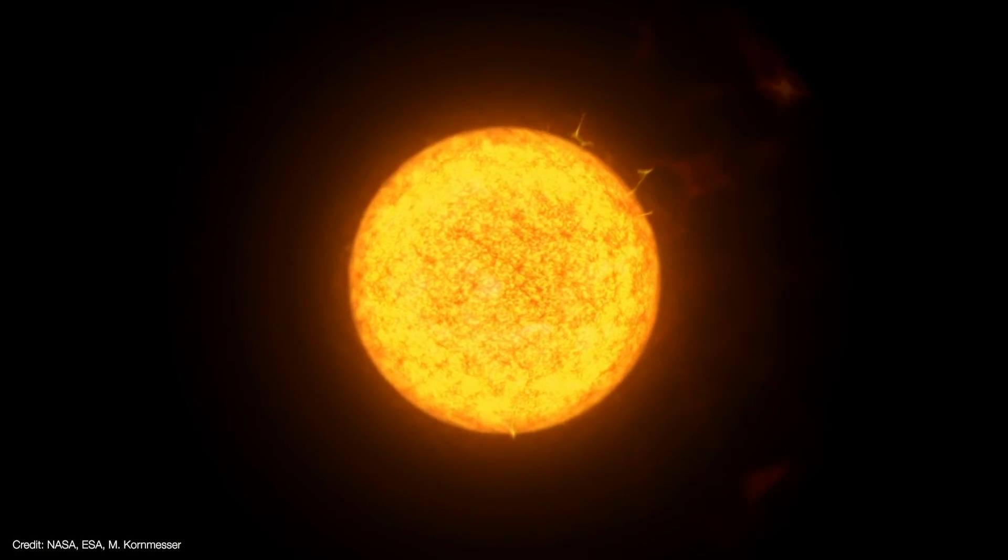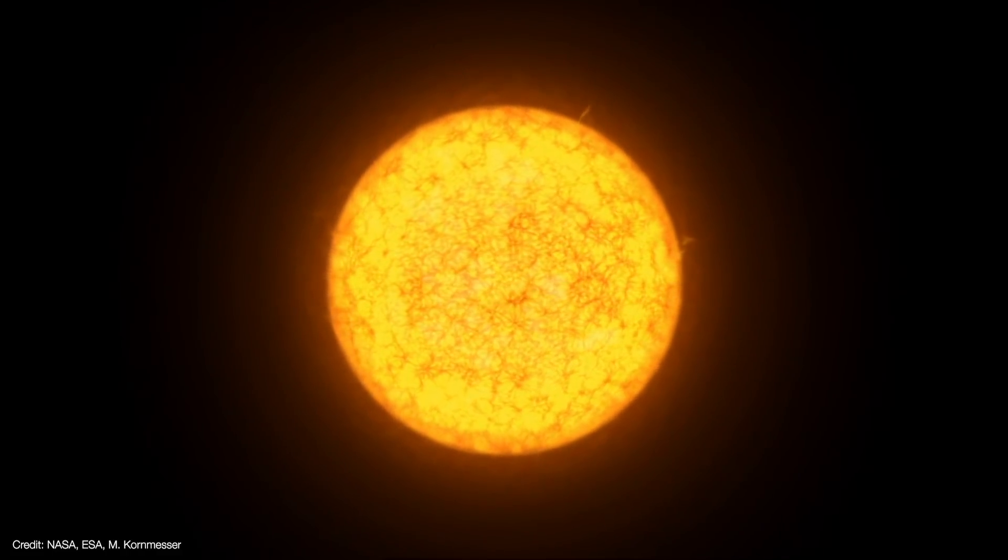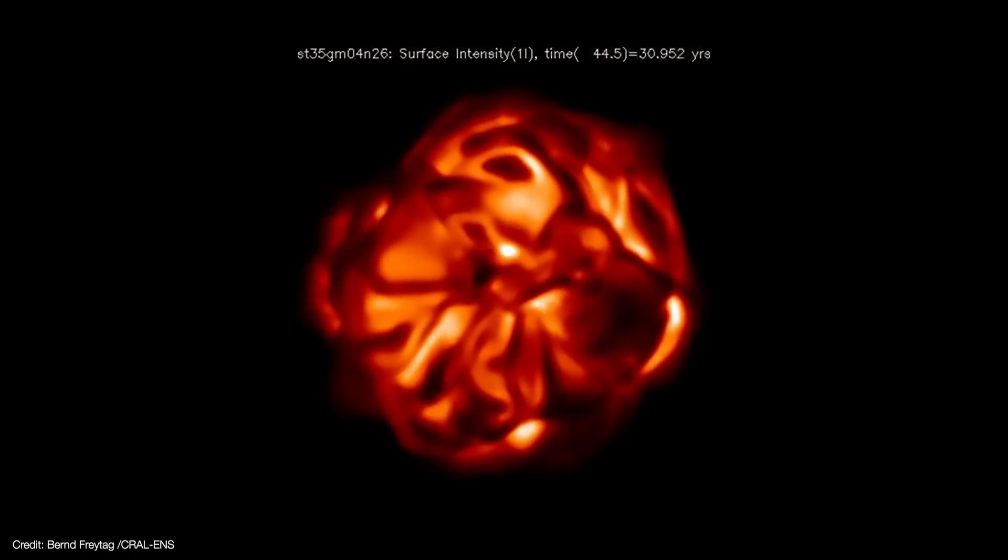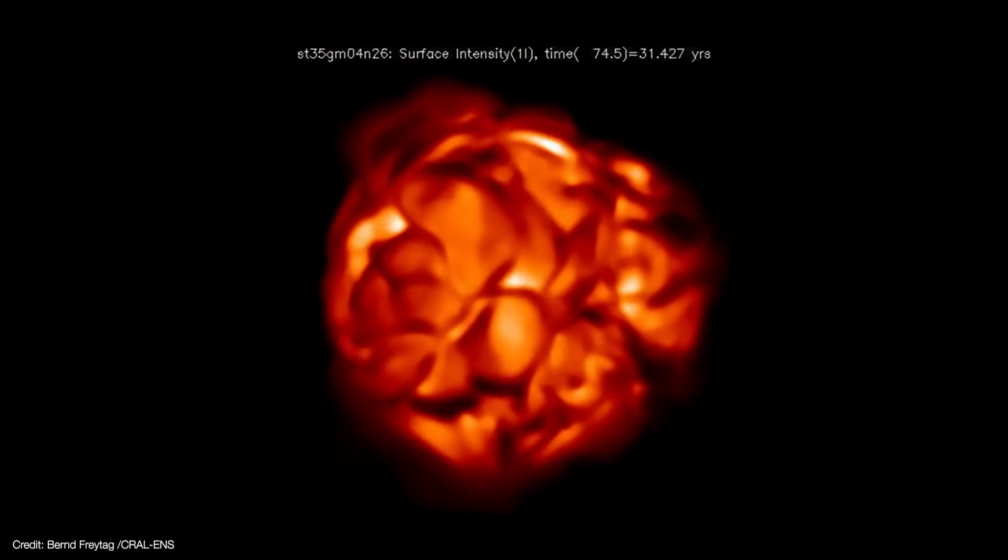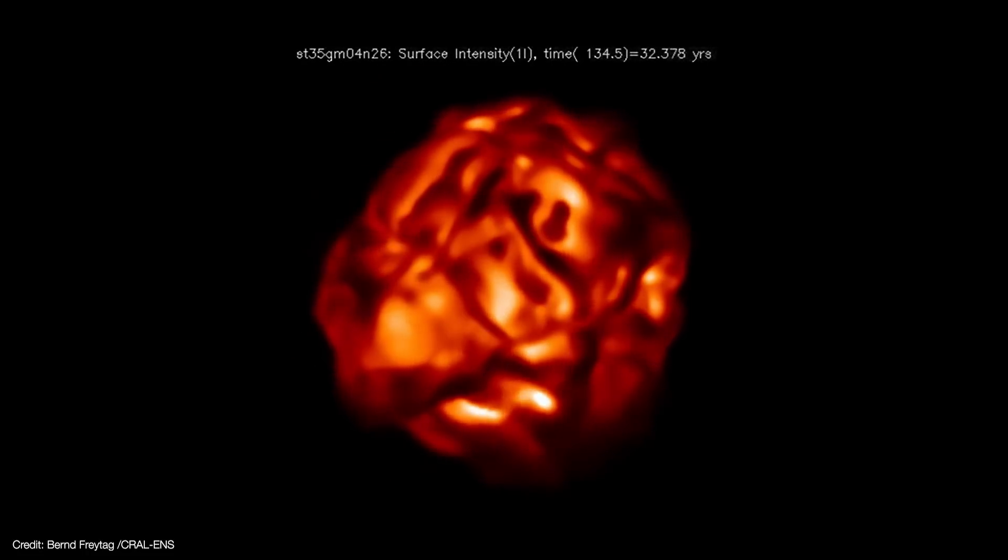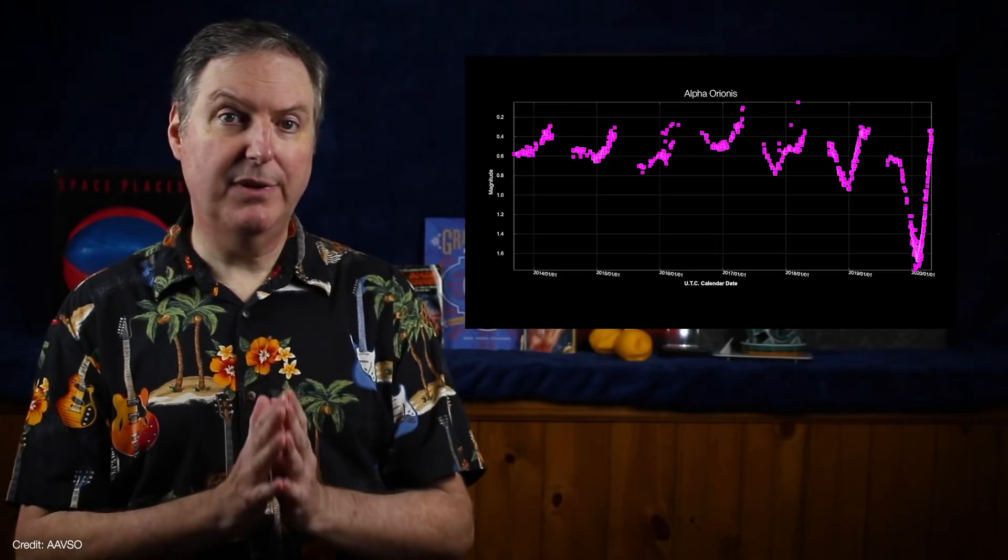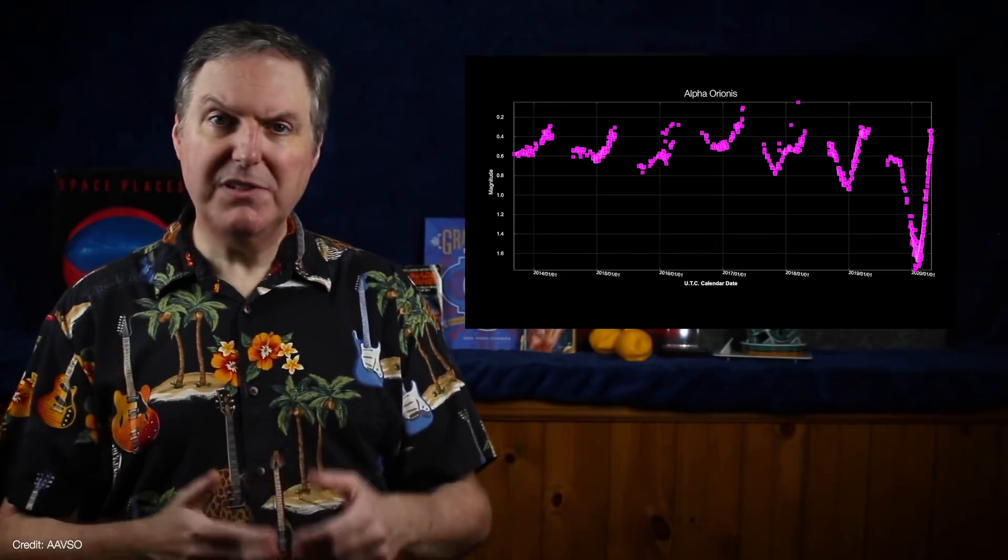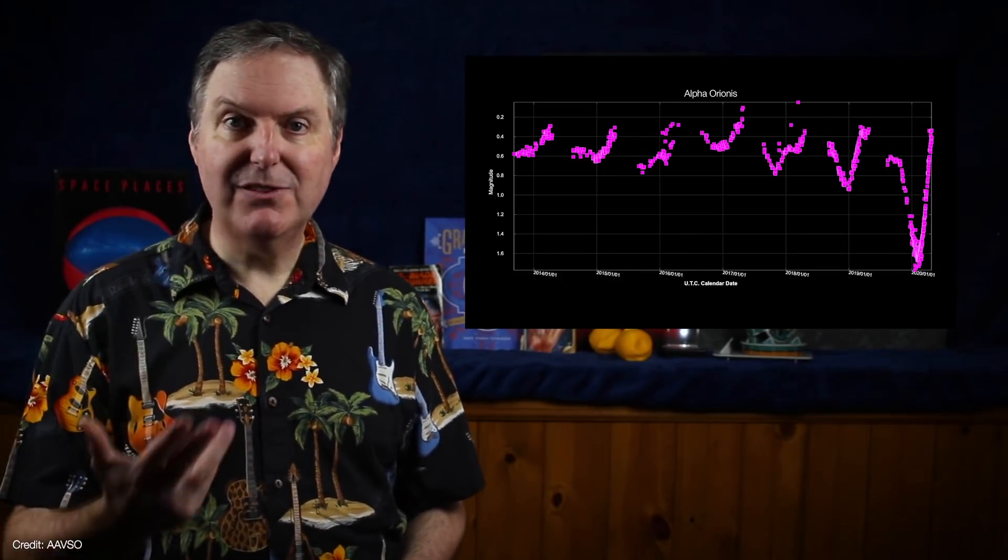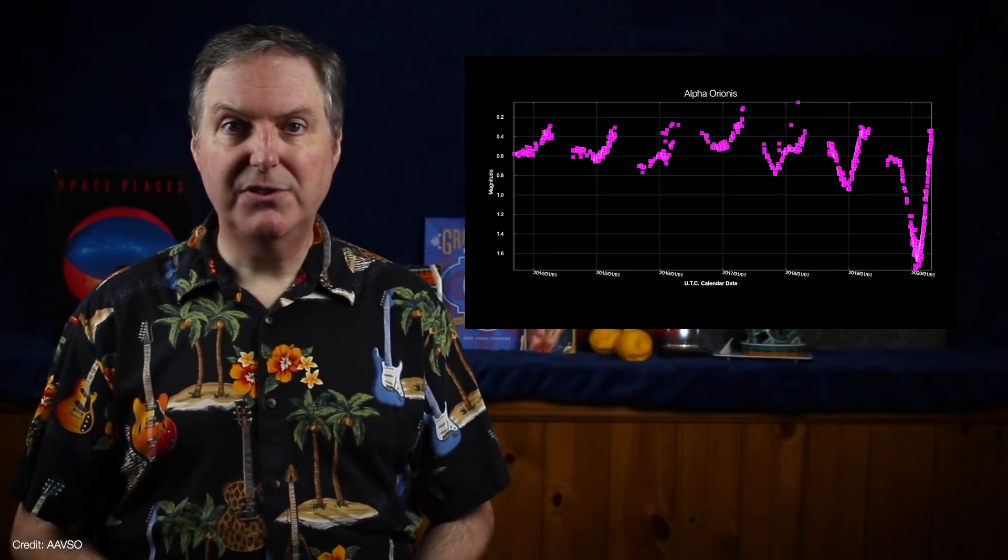Because of its age and evolution, Betelgeuse is unstable. It pulsates with a roughly 420 day period. Meanwhile, its upper photosphere, that is its surface, is strewn with gigantic convection cells that bubble several astronomical units across. That's why astronomers got so excited about the Great Dimming. It wasn't because we thought Betelgeuse was about to go supernova right there and then, but because it gave us a chance to see something unique about supernova progenitor stars.